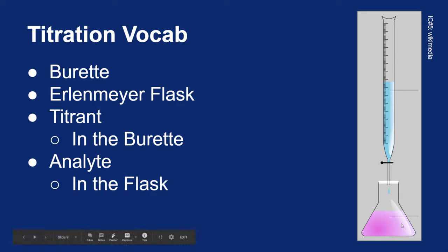The analyte is the substance in the flask. This is usually the substance that we are trying to figure something out about, often trying to find the concentration of the analyte.